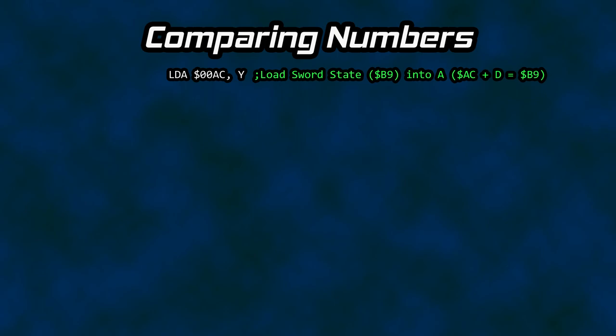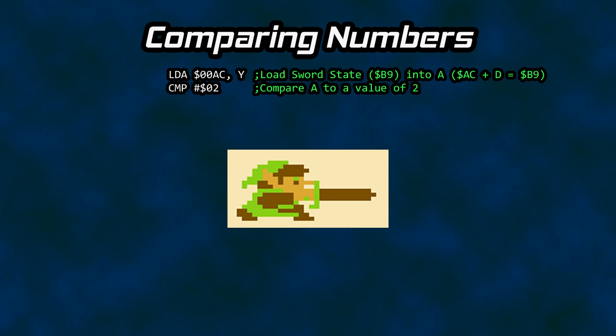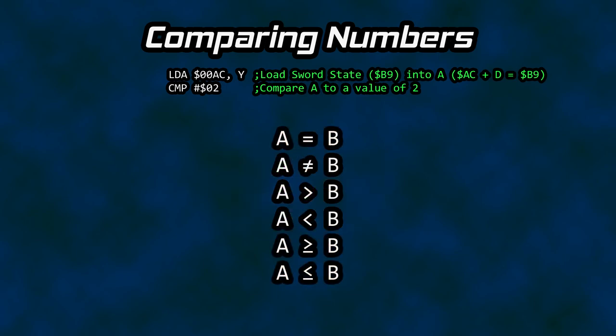The code takes the sword state stored in B9, loads it into accumulator A, and then compares it to a value of 2. The value of 2 makes sense here, as 2 is the sword state when it is stabbing forward — in this state for 8 frames and can only collide with an enemy during those frames. But what do we mean by compare with this CMP statement? Most programming languages are going to have some form of comparing two values that include equal to, not equal to, greater than, less than, greater than or equal to, less than or equal to.